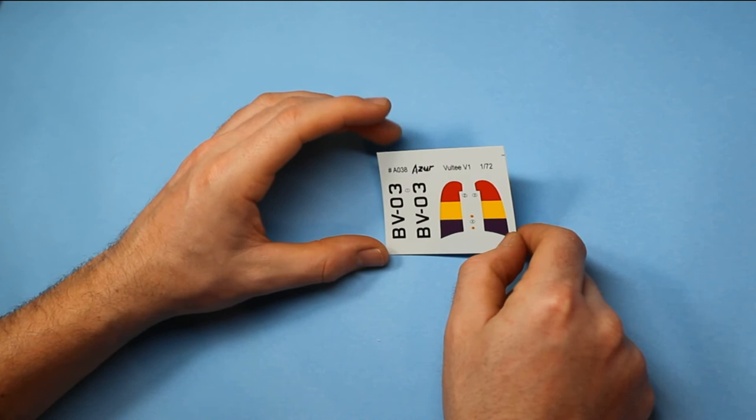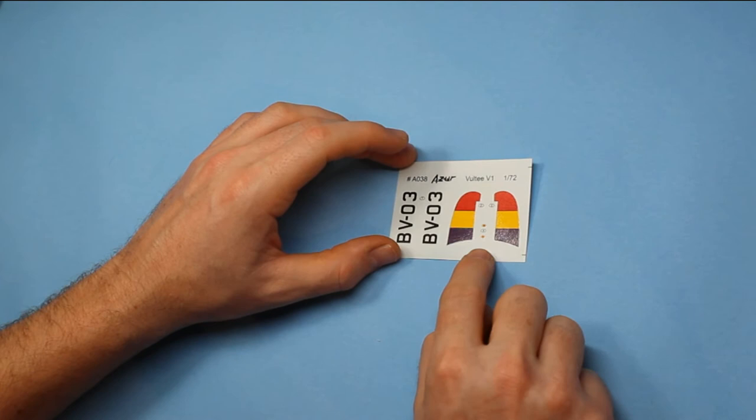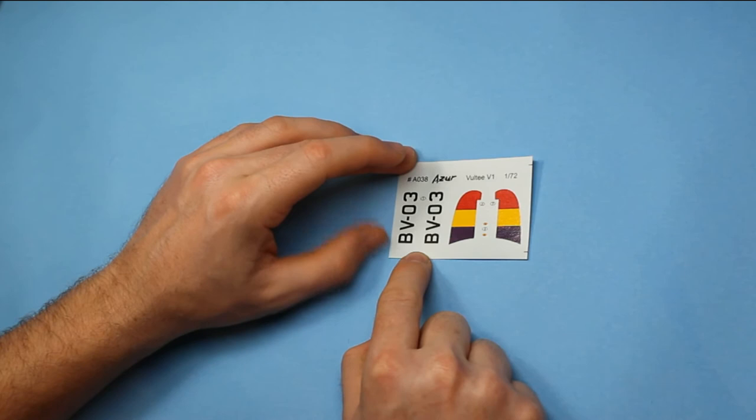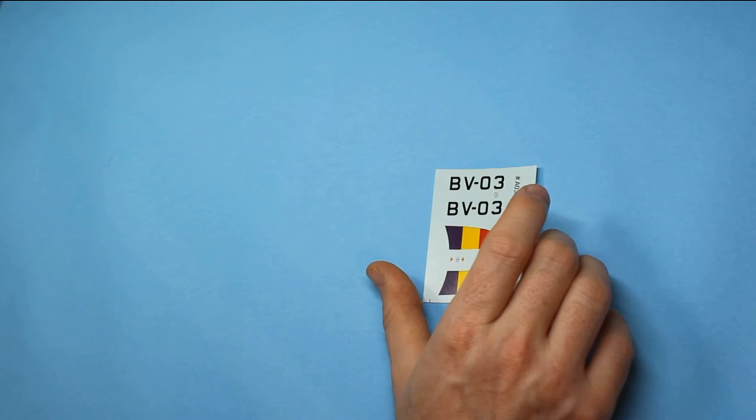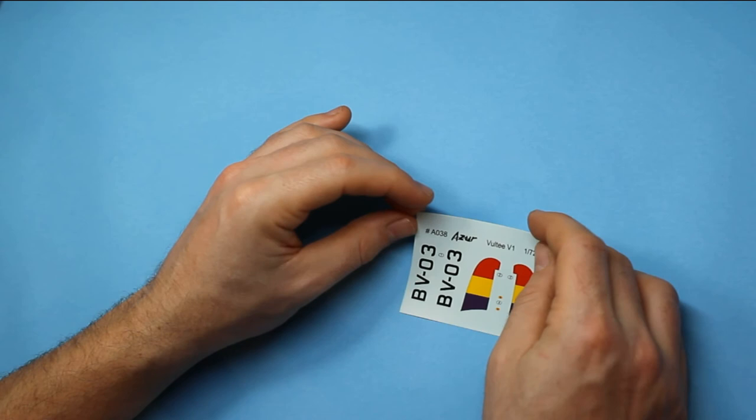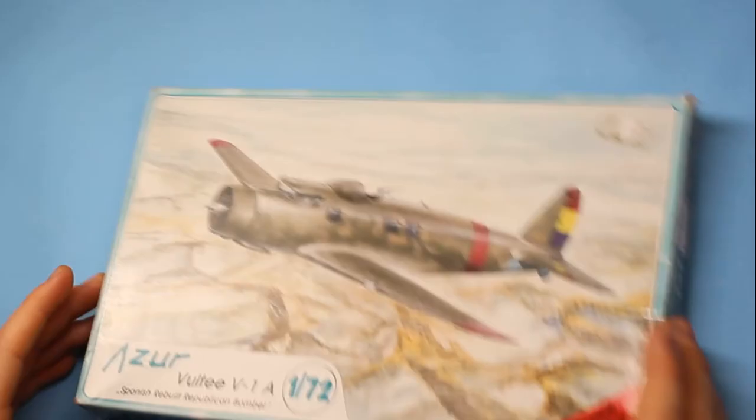And then we've got the decals here, which give you the Republican markings for the fin. Two small markings there for the propeller blade and one of the alternative markings in the kit. Comes with the serial number on the side of the fuselage. All very nicely printed. Don't look to be too much of a problem. And very much in register. So that's quite nice. I've used Azure decals quite often. I've built a few of their kits. I haven't found any problems whatsoever. They're usually very thin and conform really nicely.